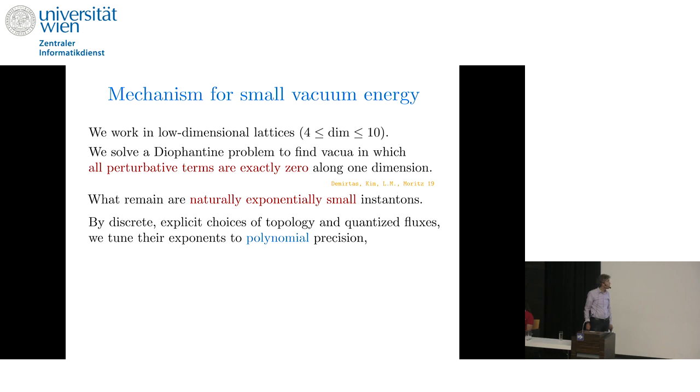What we will then do is make discrete and explicit choices of the topology and the quantized fluxes that fine-tune the exponents in the instantons to polynomial precision. So here's an actual example that I'll present. This is the superpotential. Tau is the axio-dilaton. And you see here two exponentials in tau, one with exponent 7/29ths and one with exponent 7/28ths. So we achieve that by a specific choice of fluxes.